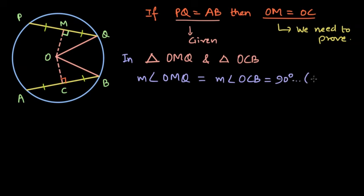Angle OMQ is equal to angle OCB and both are equal to 90 degrees. We know this from construction, because we already know that these are perpendiculars, so the angle is 90 degrees. Can we say that the triangles we are considering are right angled triangles?